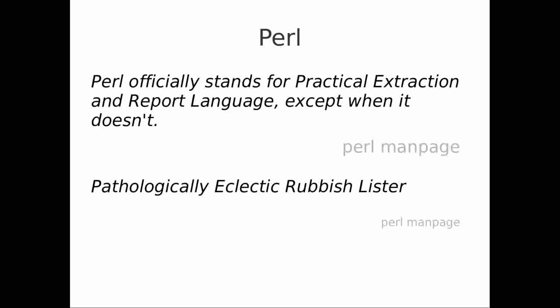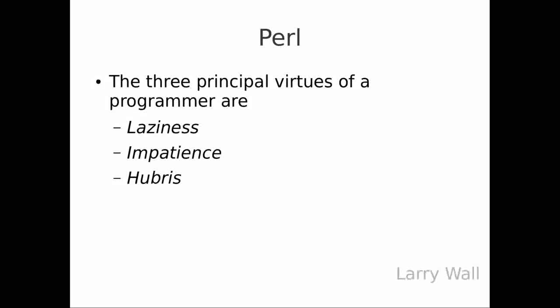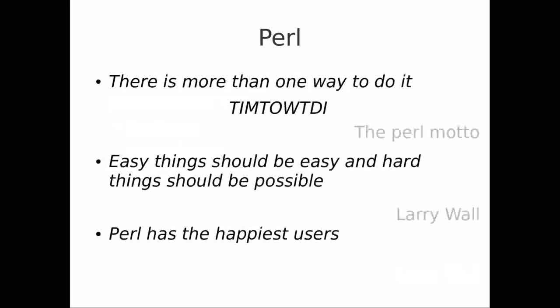Perl was really developed with one or two core concepts. One of those concepts was that there are three principal virtues of a programmer: laziness, impatience, and hubris. What that means is you want to do things quickly, and you want to do things without worrying too much about exactly getting it right. Perl really embodies this through one of the common Perl sayings called TMTOWTDI — There's More Than One Way To Do It. It's really the Perl motto.